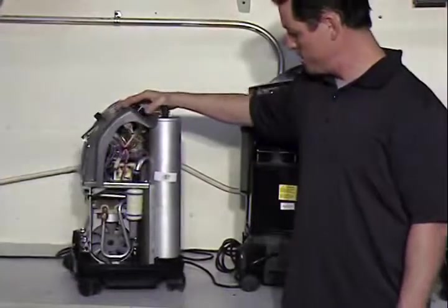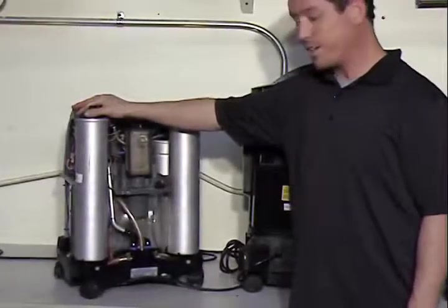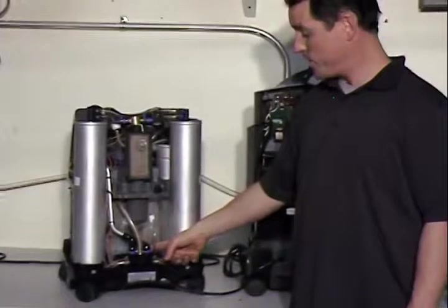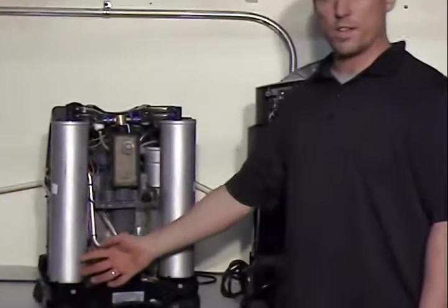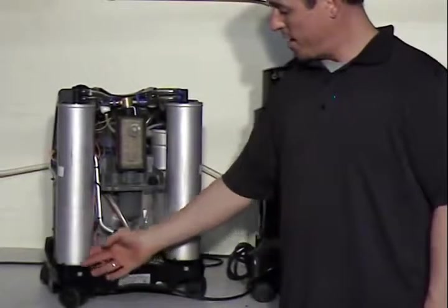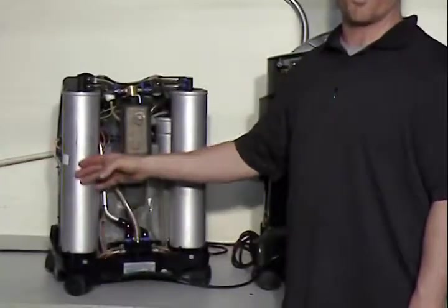The air will flow first to a four-way directional valve. This one's down here. The four-way directional valve will direct the air towards one of these sieve beds. When the air goes into the first sieve bed, this sieve bed pressurizes.